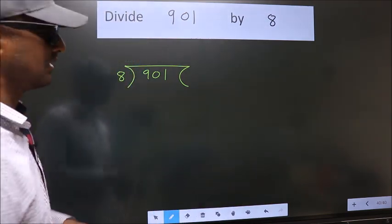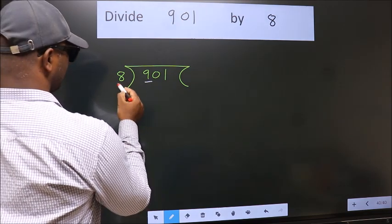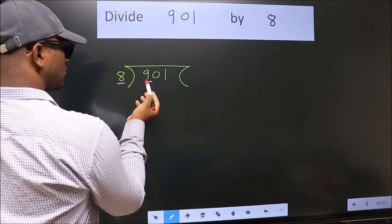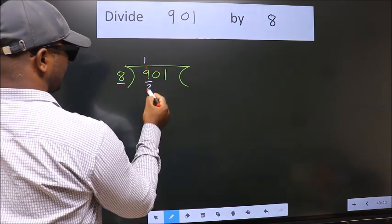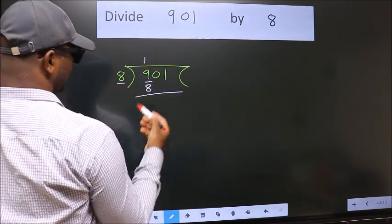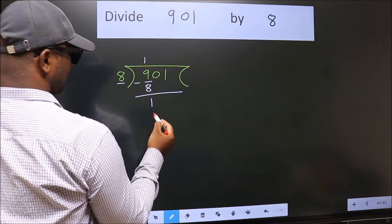Next, here we have 9, here 8. A number close to 9 in the 8 times table is 8. 8 once is 8. Now we subtract. We get 1.